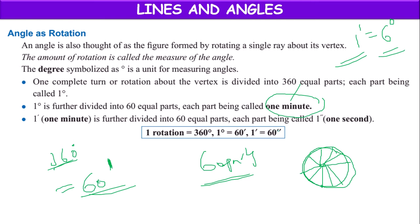This one-minute part is again divided into 60 equal parts, and each part equals 60 seconds. The symbol for seconds is double quotes or two apostrophes. So 1 minute equals 60 seconds. Based on this, whatever measurement we want, we can convert from one form to another.